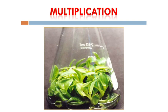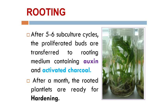You can see the multiplication — the multiplied shoots in the conical flask of banana plants. After 5 to 6 subculture cycles, the proliferated buds are transferred to the rooting medium containing a high level of auxin and activated charcoal. The activated charcoal, indicated by the black color at the base of the bottle, absorbs phenolic and toxic substances released during this process, thus preventing damage to the tissues.